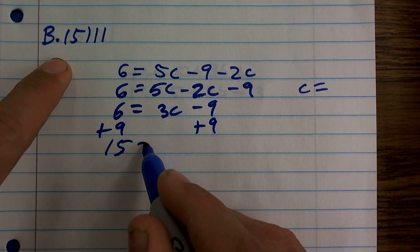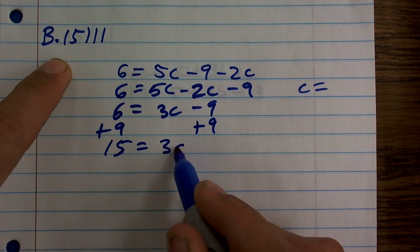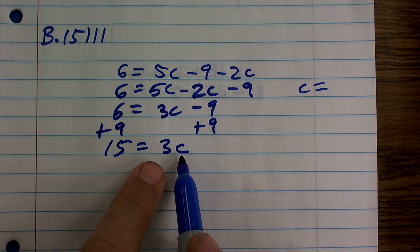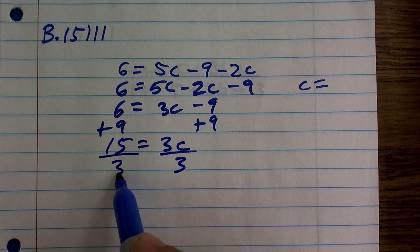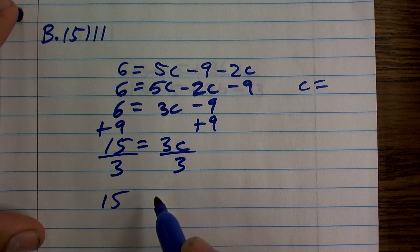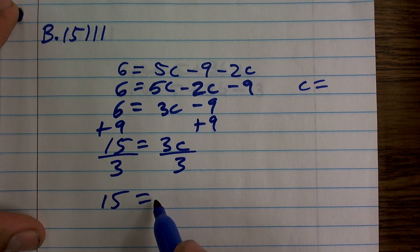Therefore, I produce an equivalent equation, which is 15 equals 3c. Now I use the inverse operation of multiplication, which is division. By applying the division property of equality, I have another equivalent equation, which is 15 equals c.